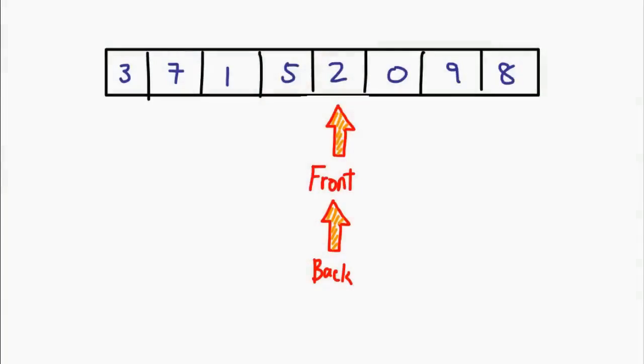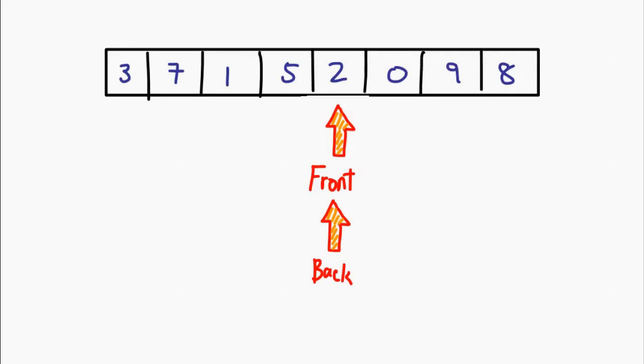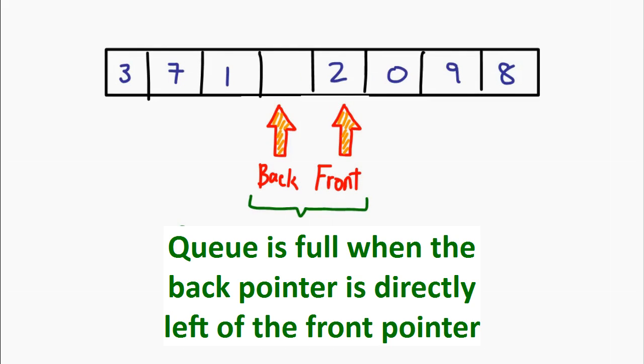This is one of the weird little things with having a circular queue that we need to look out for. The simplest way to do this would be to actually leave a gap between the front and back pointers. What this means then is that instead of having this as our array full condition, instead we make this our array full condition. In other words, a queue is full if the back pointer is directly left of the front pointer.